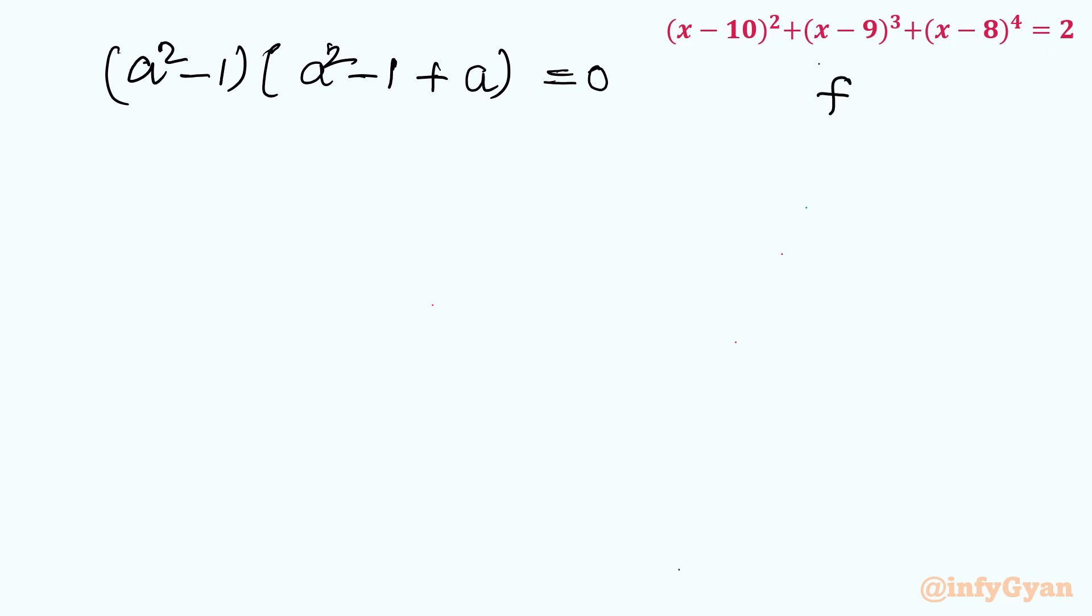Now f·g = 0, that means either f = 0 or g = 0. Let us apply. I will write a² - 1 = 0, or a² + a - 1 = 0. Let us solve both the quadratic equations one by one. Let me consider this is my equation 1, and this is my equation 2.